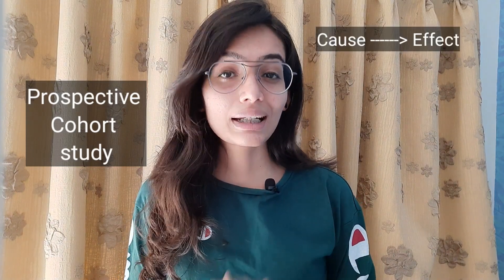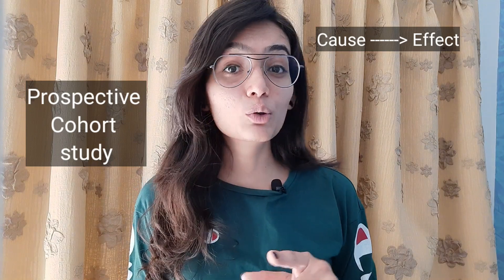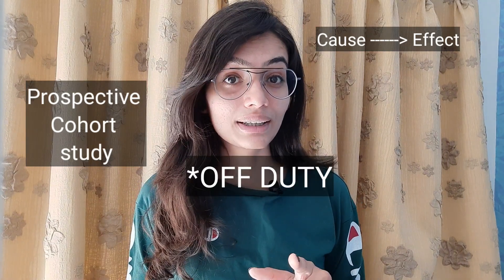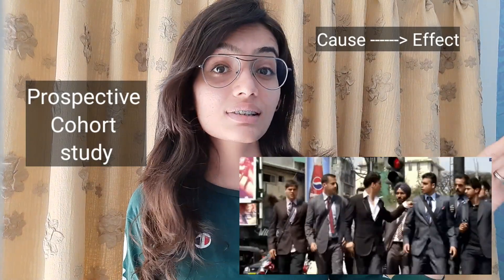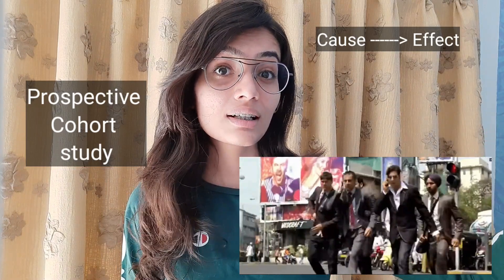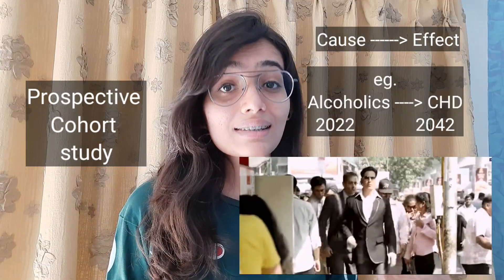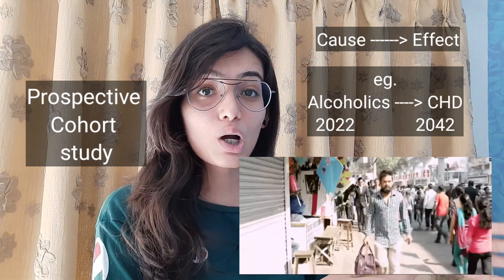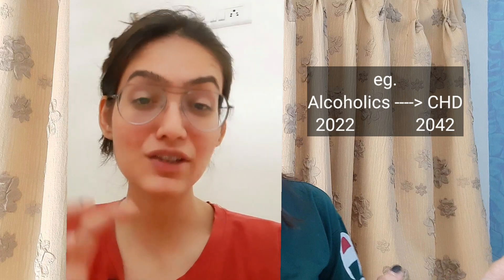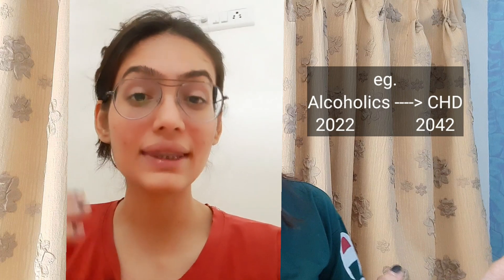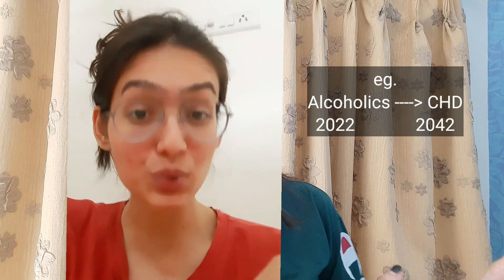In this video we are going to understand the different epidemiological studies in a fun way. Prospective is always in the forward way, from cause to effect. To understand this better, I would like to compare it with the movie 'Holiday' — the soldier is never on a holiday, Akshay Kumar's movie. In that movie, Akshay Kumar with his team follows the suspect and by following the suspect they finally reach the destination. This is like a prospective cohort study: following the cause and reaching the effect. For example, you choose alcoholic people as your study population in 2022, then follow them in 2042 and see which of them have chronic heart disease.